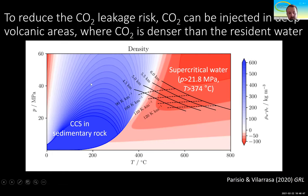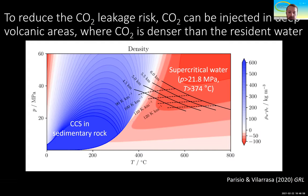In this situation, CO2 is buoyant and tends to flow upward. But if we go to higher pressures above 22 MPa and high temperatures above 375°C, water is in supercritical state, and in these conditions CO2 is denser than the water.